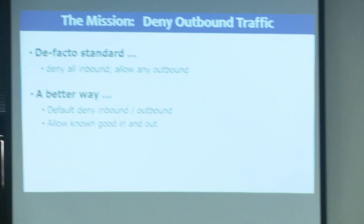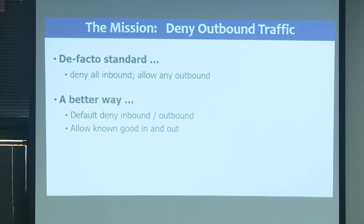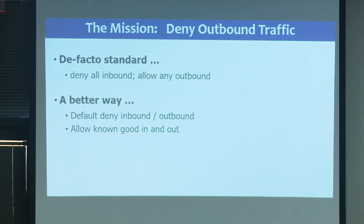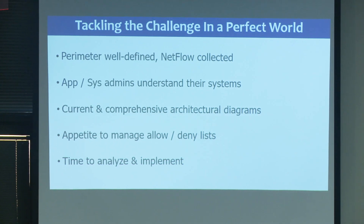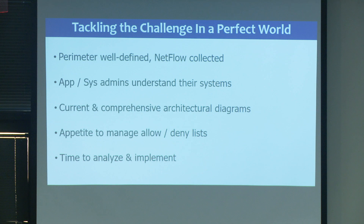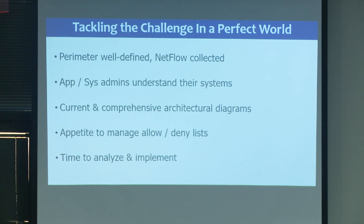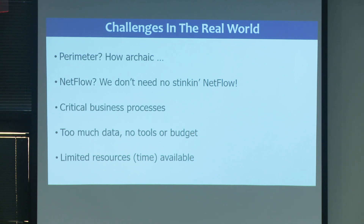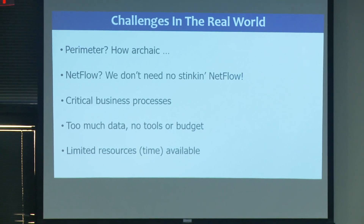This is also an incredibly powerful detective control. If you understand how your application behaves and you know that the server never reaches out to the internet, and you get an alert on the firewall that a connection was attempted and blocked, that's probably something you want to look into. Our mission is to deny everything, in and out. Unfortunately the de facto standard is we're pretty good at blocking inbound but we kind of suck at blocking outbound. The better way would be to block everything in and out and only allow the known good.